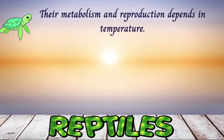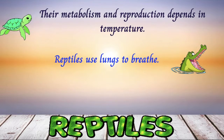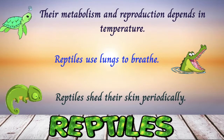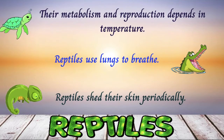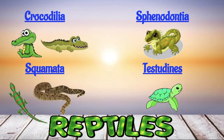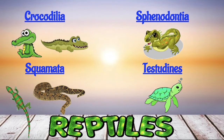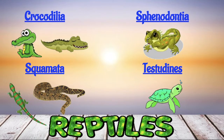Some more facts: their metabolism and reproduction depends on temperature. Just like humans, all reptiles use lungs to breathe. And lastly, reptiles shed their skin periodically — the younger they are, the more often they shed. Reptiles have four orders: mainly Crocodilia, Sphenodonsia, Squamata, and Testudines.